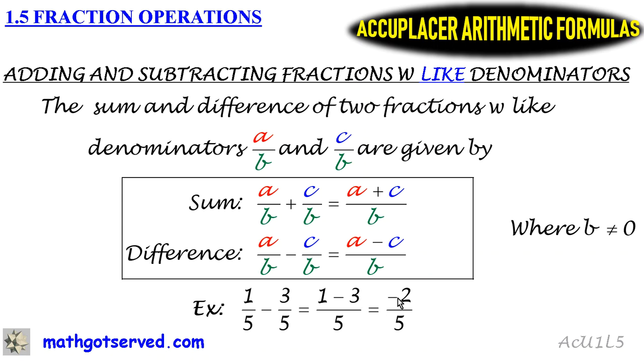So one minus three is negative two, and notice you keep the denominator, which is five. That's how to use the subtraction formula for fractions with like denominators.